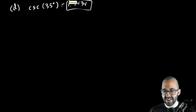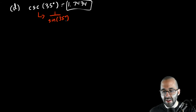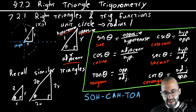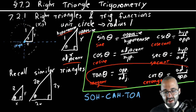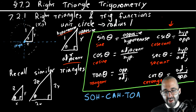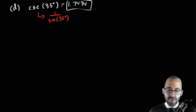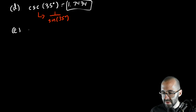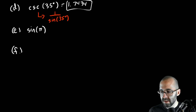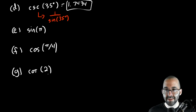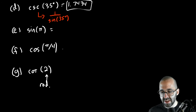If you're using a handheld calculator, which doesn't have a cosecant button, you type one divided by the sine of 35 degrees, because cosecant is the reciprocal function of sine. For secant, do 1 over cosine; for cotangent, do 1 over tangent. Parts e, f, g: sine of π, cosine of π/4, and cotangent of 2 radians. Remember: if there's no degree symbol, it's in radians. You can type these into your calculator, Google, or Desmos, which does accept radians.